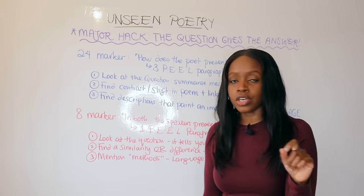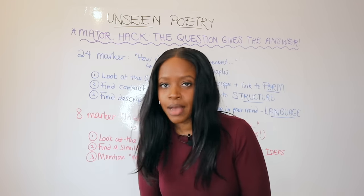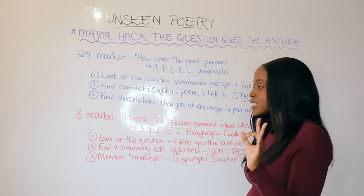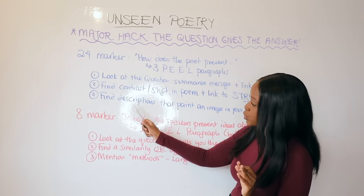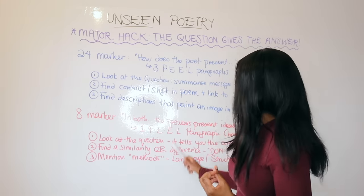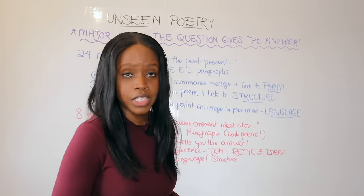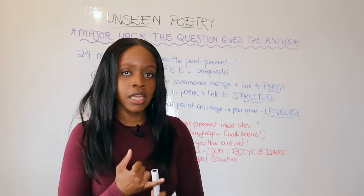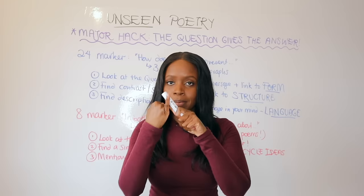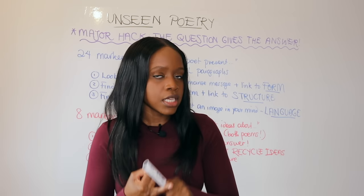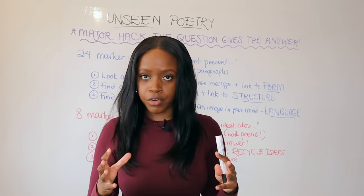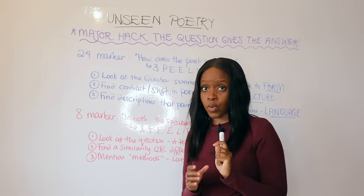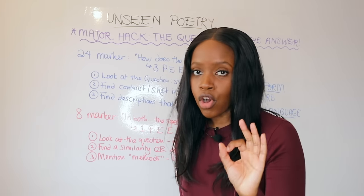For the final 24 marker paragraph, find interesting descriptions that paint an image in your mind as a reader, and talk about language. Does the poet paint an image using similes, metaphors, sibilance? That's language. That covers the 24 marker, but remember there's also a part two — the 8 marker.